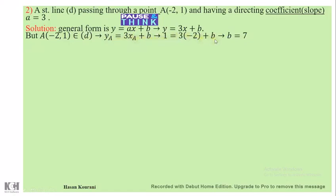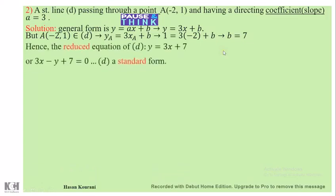At the end we get the value of b. After that, we just replace b by its value to get the reduced equation of d, which is y = 3x + 7.